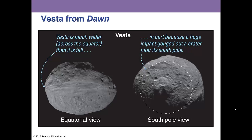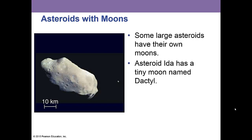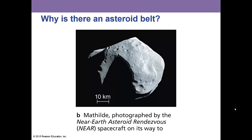Here is a rather large and fairly round asteroid — Vesta, from the Dawn spacecraft. We also have some asteroids that have their own moons. Here is asteroid Ida with a tiny moon named Dactyl.